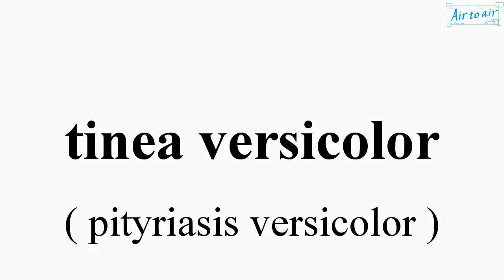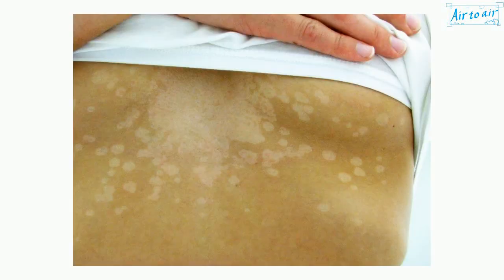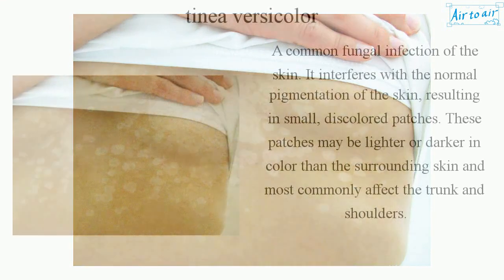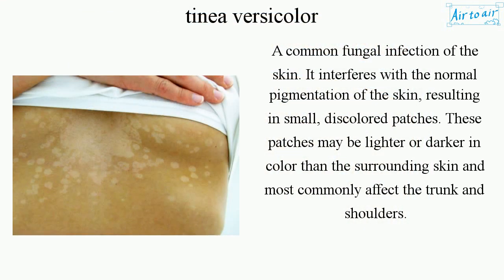Tinnia versicolor is a common fungal infection of the skin. It interferes with the normal pigmentation of the skin, resulting in small, discolored patches. These patches may be lighter or darker in color than their surrounding skin and most commonly affect the trunk and shoulders.